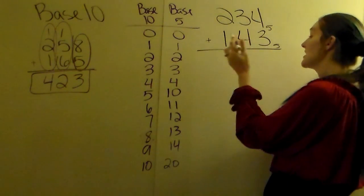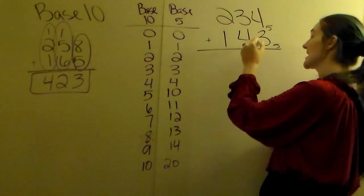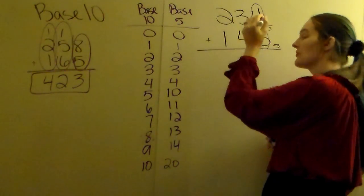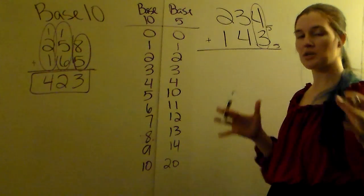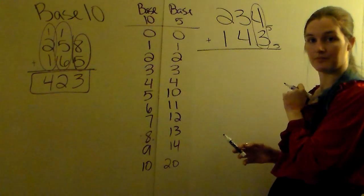So what we're going to do is when we actually add these together, we're going to treat it very similarly, but we've got to remember to stay in base 5. So 4 plus 3, normal numbers base 10, 4 plus 3 is 7.